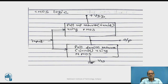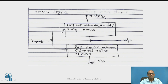This is the general block schematic of CMOS logic. The pull-up network or circuit uses only PMOS, and the pull-down network or circuit uses only NMOS. The pull-up network connects to VDD, the pull-down network connects to ground, and the output is taken between them. The common input is applied to the gates of MOSFETs in both the pull-up and pull-down networks.